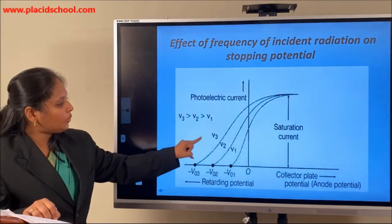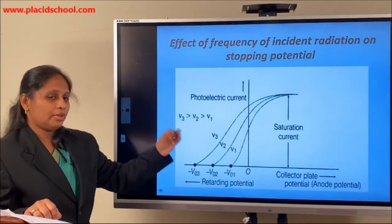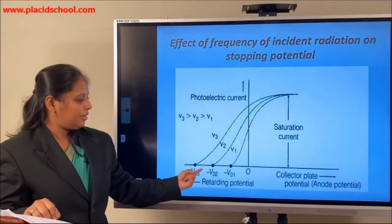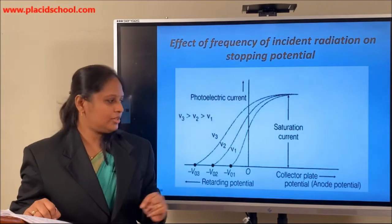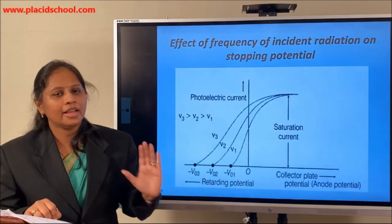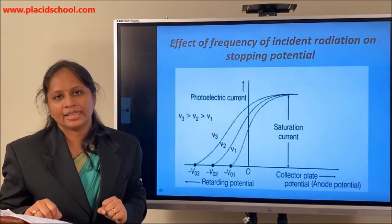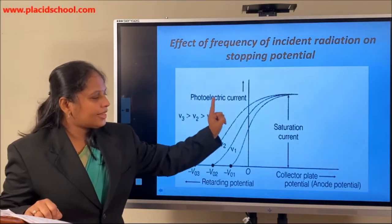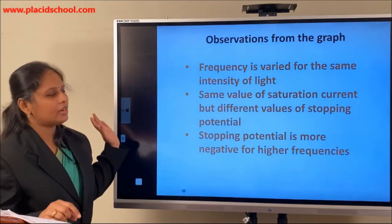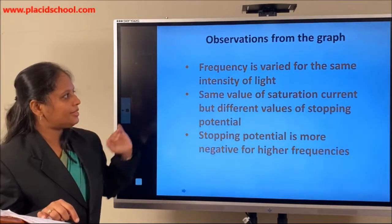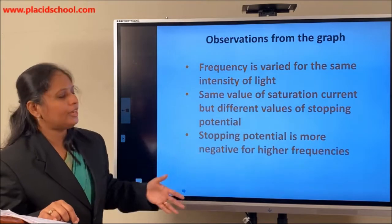Here you can see ν3 > ν2 > ν1. As the frequency of the radiation is increased, the value of the potential required to stop the electrons increases — because the most energetic electron must also be brought to rest. So we can relate the energy of the electron with the stopping potential: as frequency increases, the kinetic energy of the electrons also increases, and we need more negative potential to repel the most energetic electron. The saturation current depends on the intensity of light, but the stopping potential is completely independent of the intensity of light.